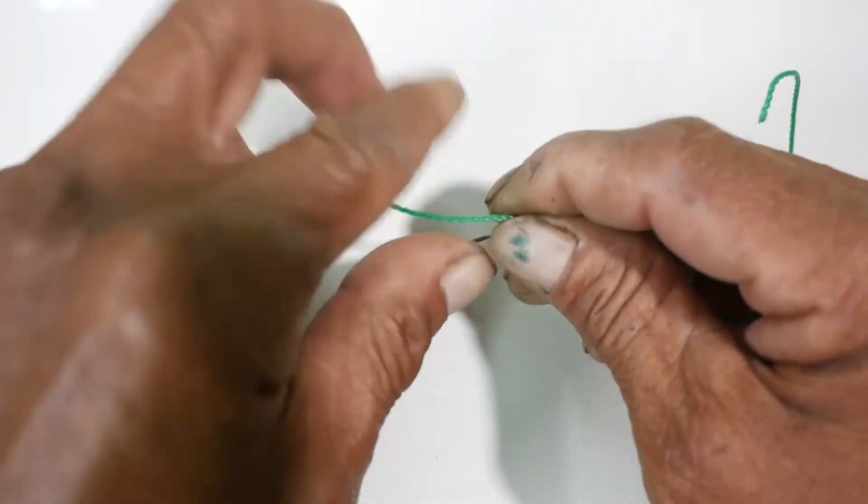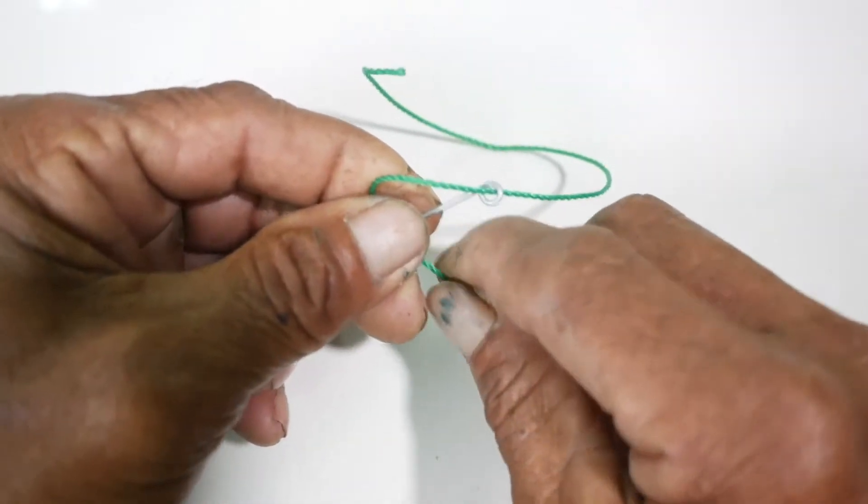The snell knot is a type of hitch attached to an eyed hook to provide an even straight line pull when fishing.